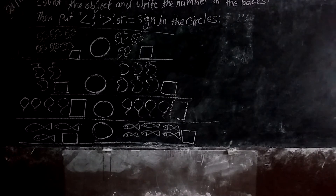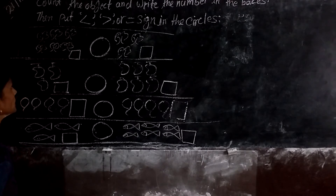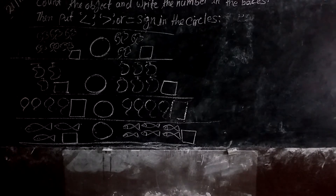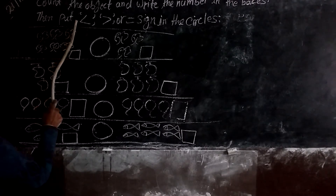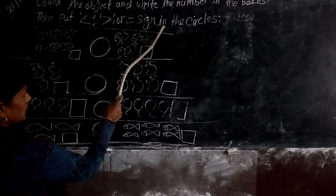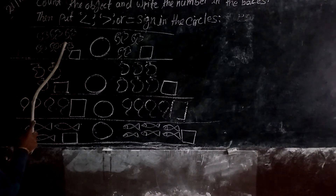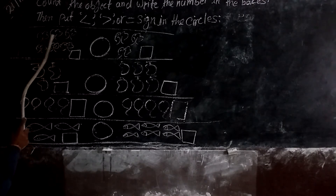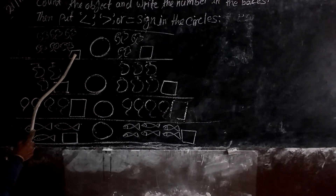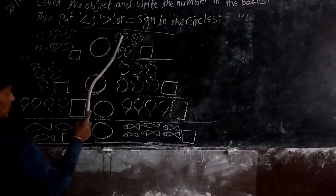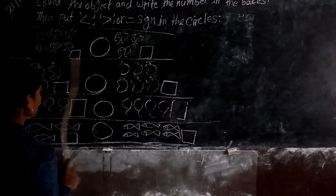Good afternoon, dear friends. Class, RPGs — count the object and write the number in the boxes, then put greater than, less than, or equal sign in the circle. Students, for this object you have to count and write the number in the boxes. First, count and write the number in the boxes. This is how it's written.